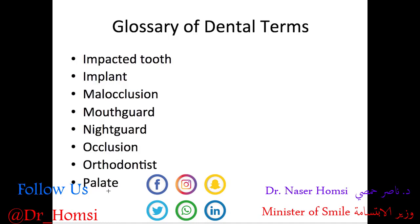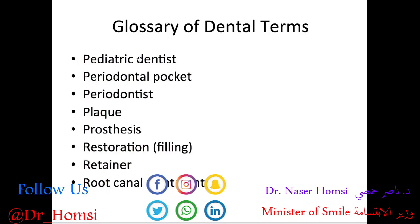The palate refers to the hard and soft tissues that form the roof of the mouth. A pediatric dentist specializes in treating children. A periodontal pocket is a deep area between a tooth and the gums resulting from gum disease. A periodontist is a dentist who specializes in treating the periodontal tissues surrounding the teeth — like the gums, bone, and periodontal ligament. Plaque is a sticky film of bacteria and other substances that coat the teeth; brushing and flossing help remove plaque, and if not removed it can lead to tooth decay and gum disease.